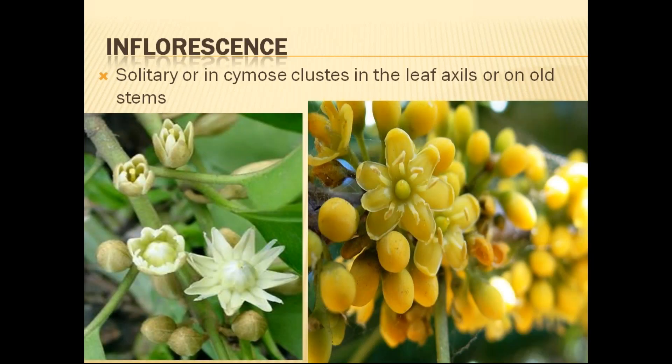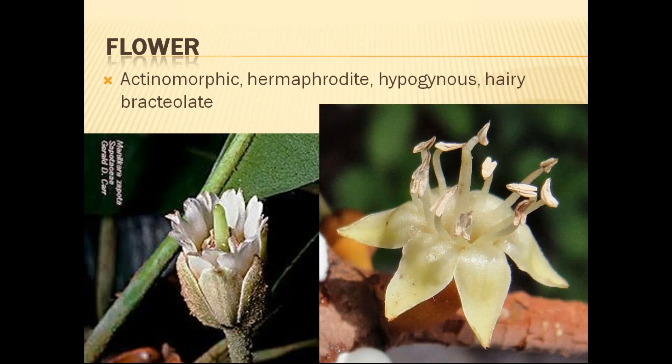The inflorescence is cymose — solitary or cymose inflorescence is seen in this family, arising from the leaf axil or old stem. The flowers are actinomorphic, hermaphrodite, that is bisexual flowers, and hypogynous. There are bracts and bracteoles both present, with a hairy structure on the bracts visible in the left side photograph — hairy outgrowths on bracteoles are one of the prominent features of this family.